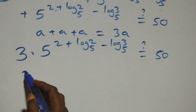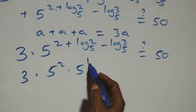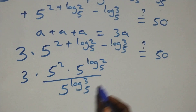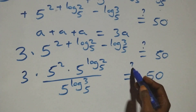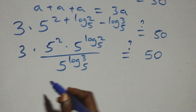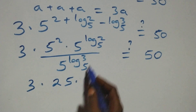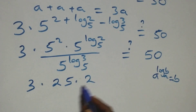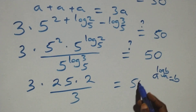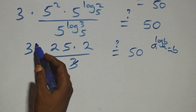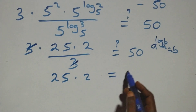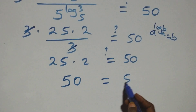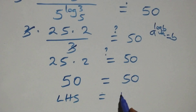Applying the law of indices, we get 3 times 5 squared times 5 raised to power log₅2, divided by 5 raised to power log₅3, equals 50. Using the identity a raised to power log_a(b) equals b, we get 3 times 25 times (2 over 3) equals 50. The 3's cancel, leaving 25 times 2 equals 50, which is true. Therefore the left-hand side equals the right-hand side.